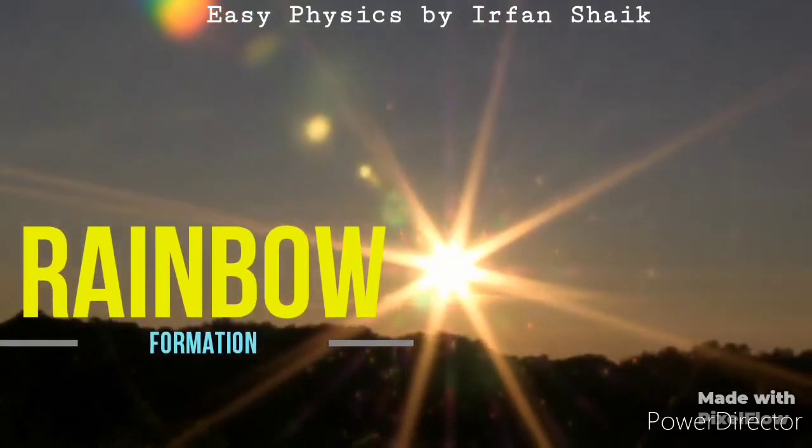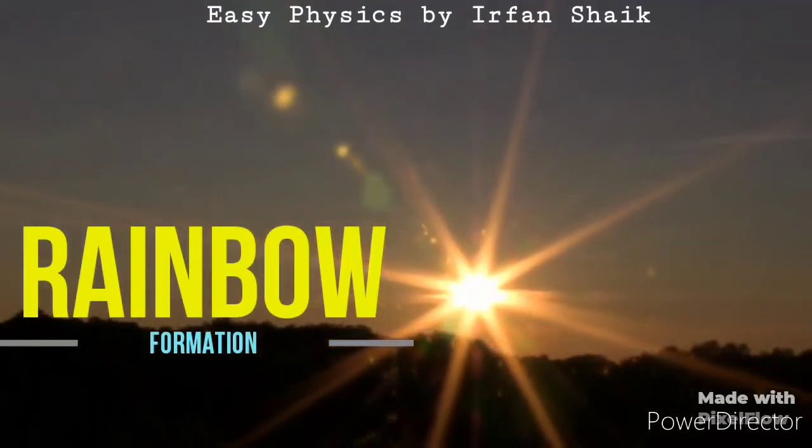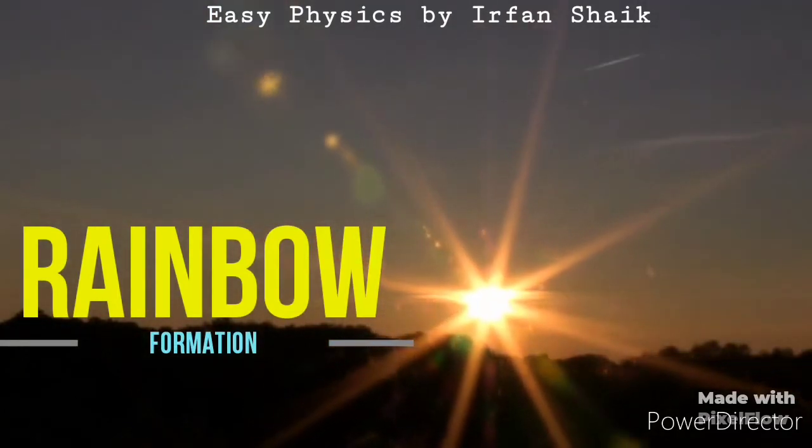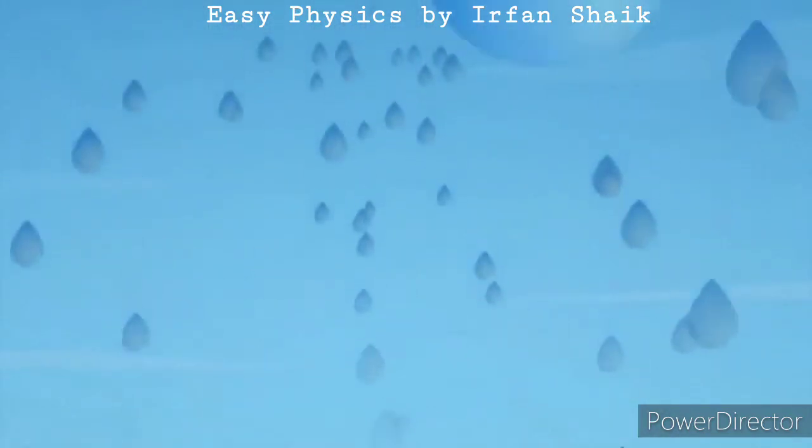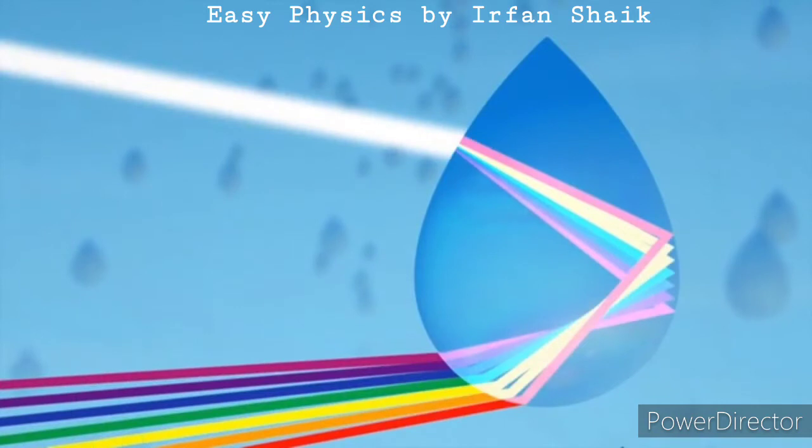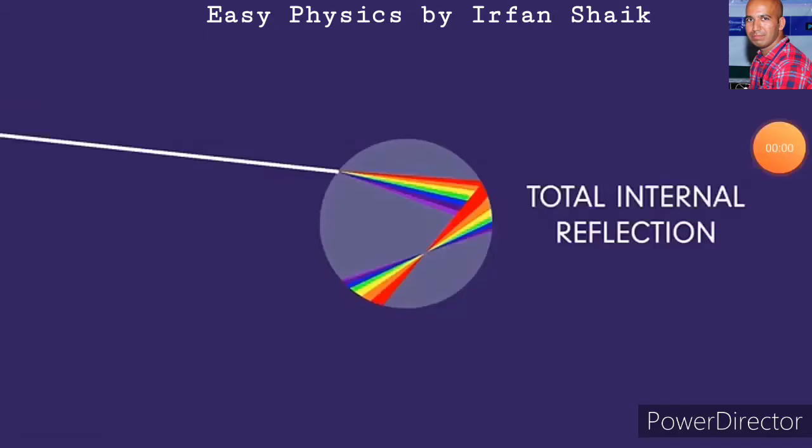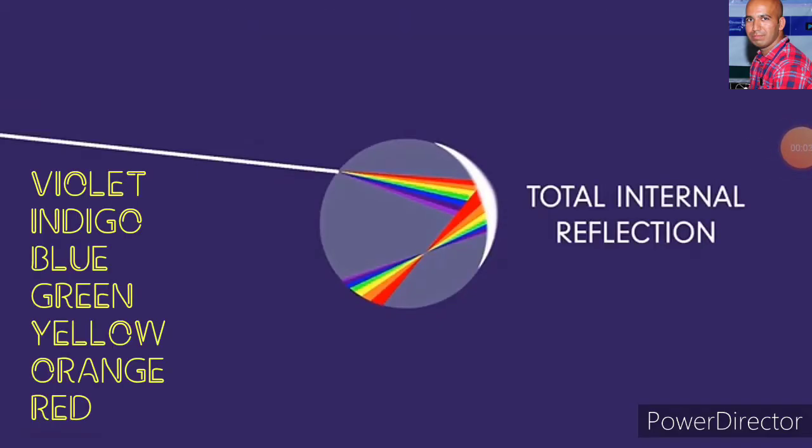Let us learn the formation of a rainbow. A water drop in the atmosphere acts as a prism due to dispersion. The light ray is deviated or divided into seven colors: violet, indigo, blue, green, yellow, orange, and red after the first refraction.